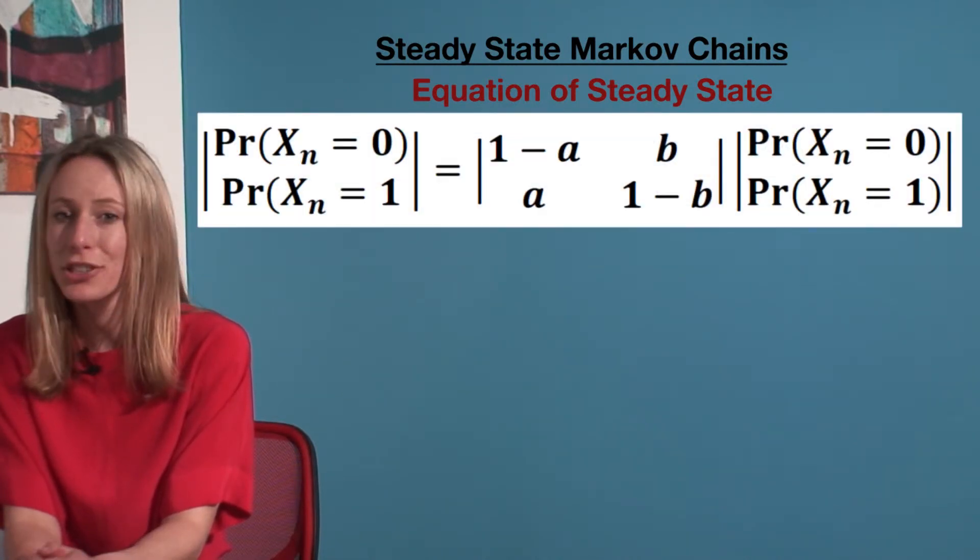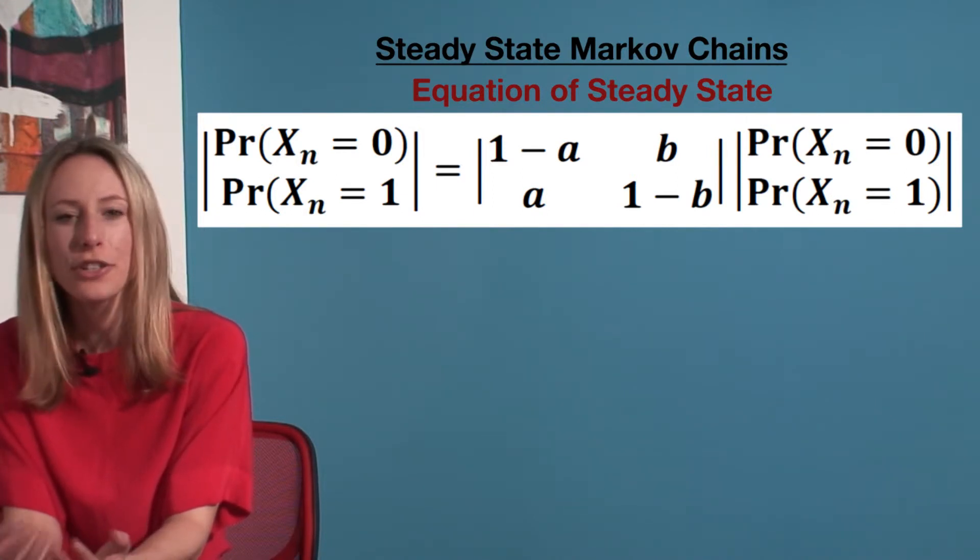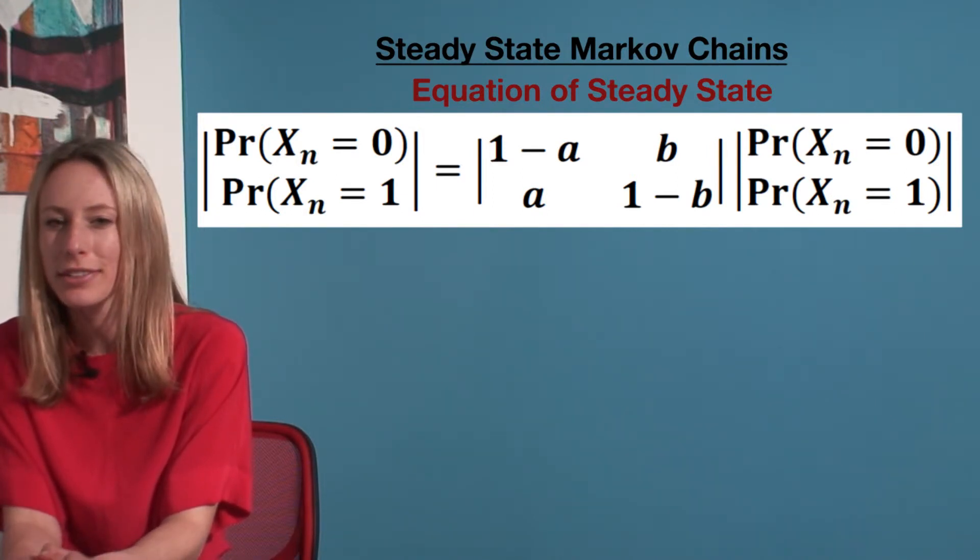Therefore, if we substitute these values into the transition matrix and the current state in for the future state, we get a new matrix with two equations and two unknowns.